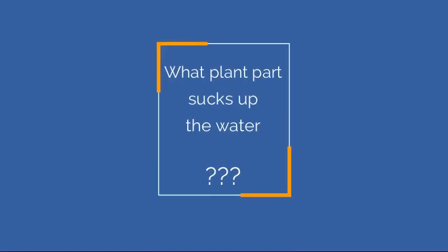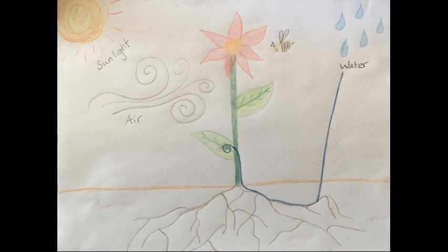Let's think about how the plant uses its different parts to take in these three important ingredients. Starting with water — think about when those raindrops fall to the ground, how would the plant get to that water? What part would it use? The roots! Now that we know the roots have the job of sucking up the water, we're going to add a line using blue crayon that goes from the water label down into the roots and up through the stem and into one of the leaves.